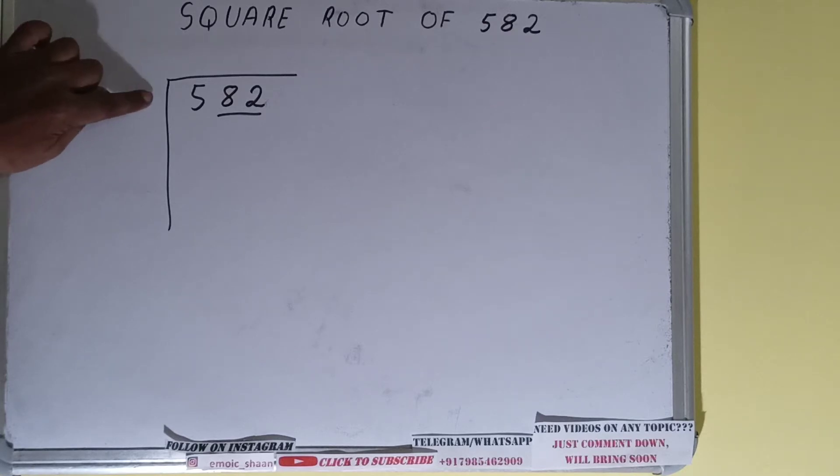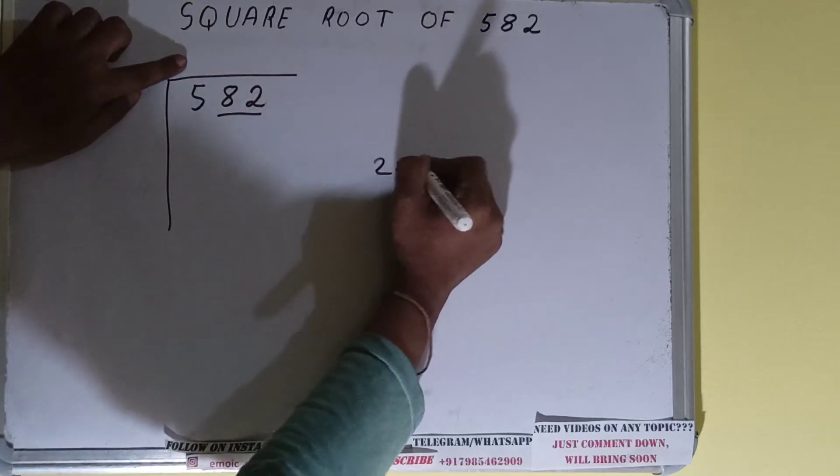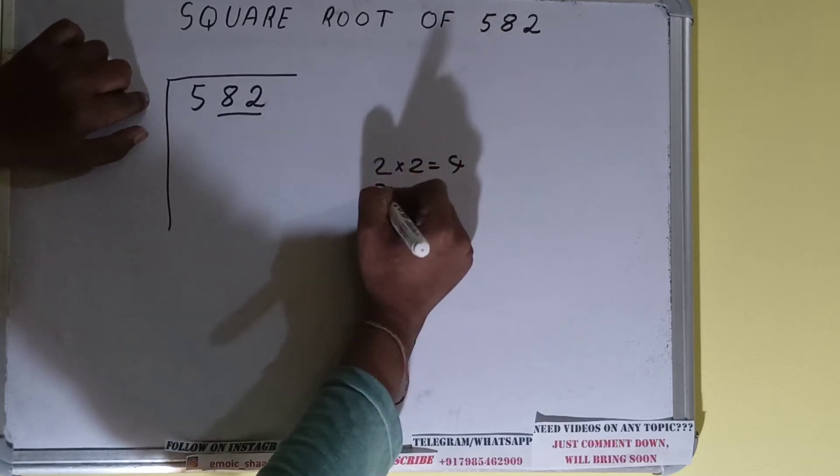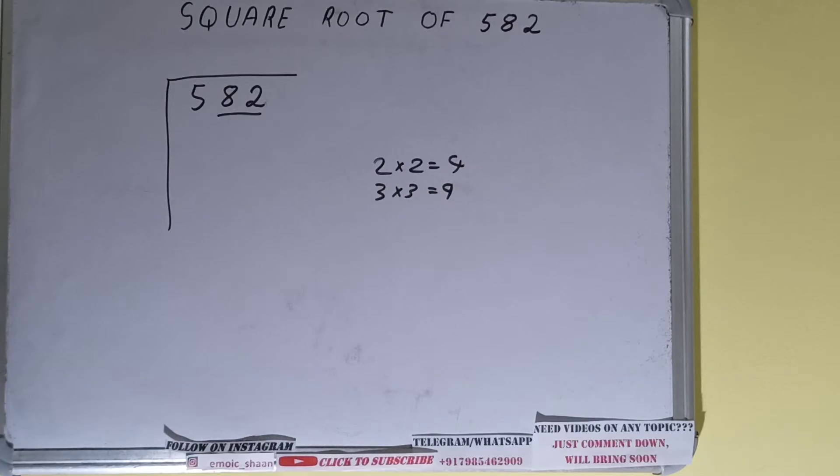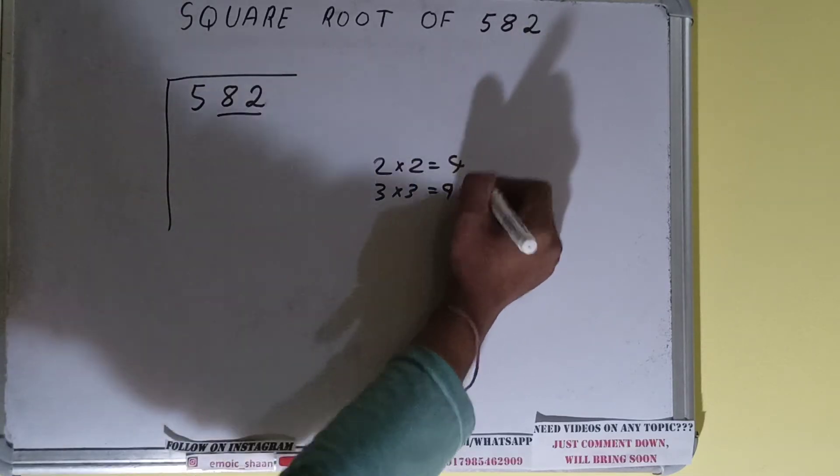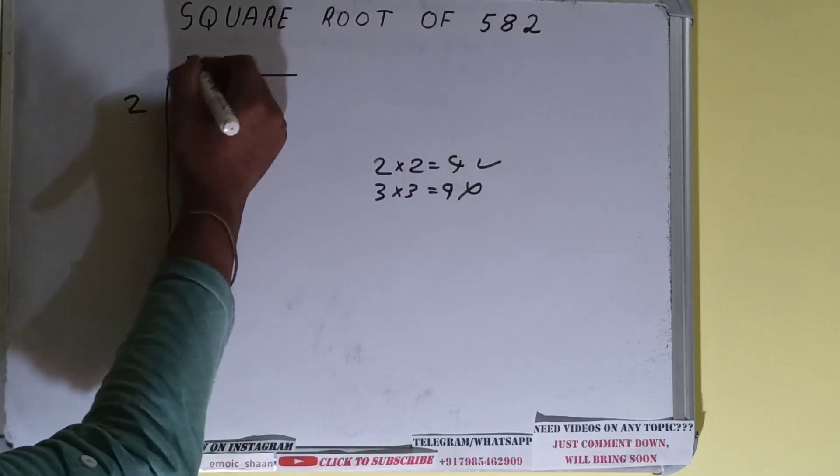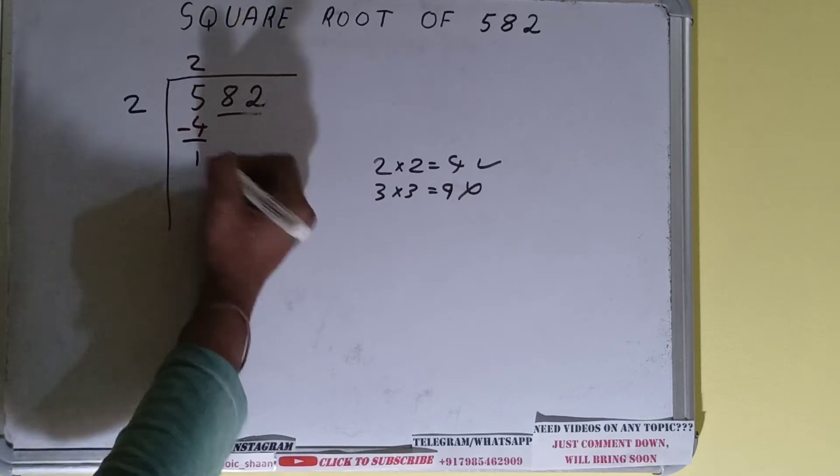The rule is whatever number we write here we have to write here also. If we write 2 here and 2 here it will give 4. If we write 3 here and 3 here it will give 9. We cannot use 9 because it is greater than 5, so we use 4. 2 times 2 gives 4. Subtract and 1 will be left.